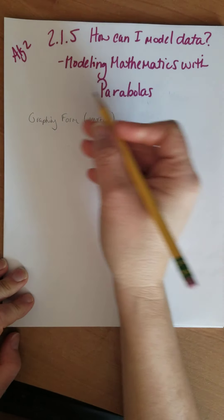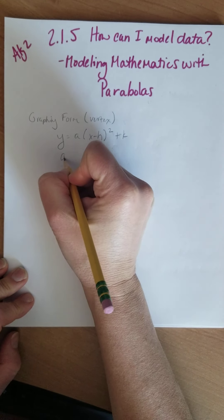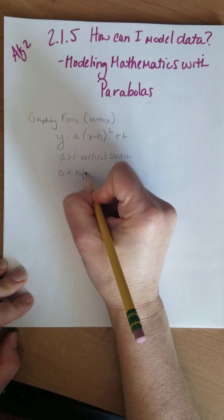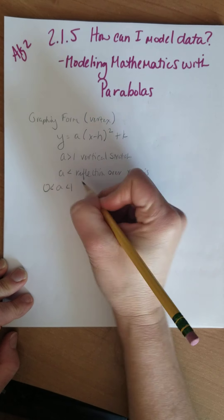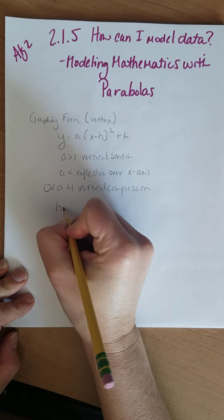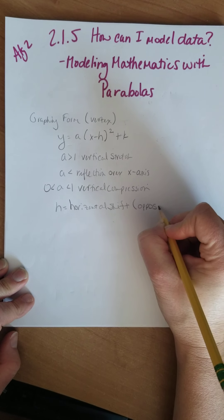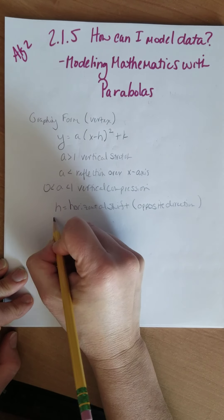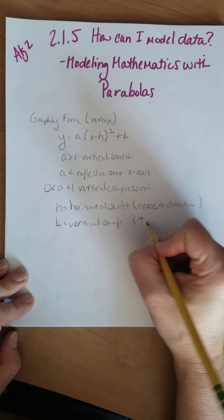Let's review graphing form, also called vertex form. Graphing form is y equals a times the quantity x minus h squared plus k. a's greater than one are vertical stretches. a's less than one would be a reflection over the x-axis. a's between zero and one would be a vertical compression. h is our horizontal shift — remember that's in the opposite direction: plus means to the left, minus means to the right. And k is your vertical shift: up is plus, down is minus.